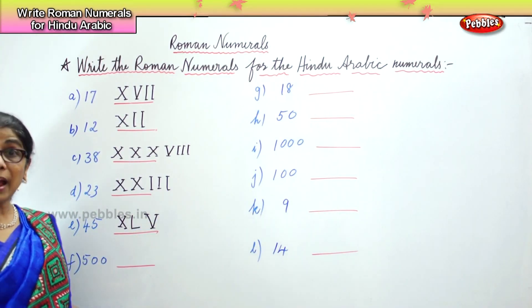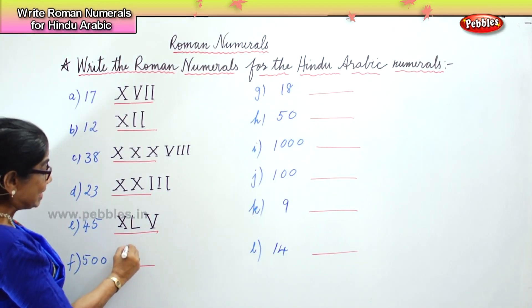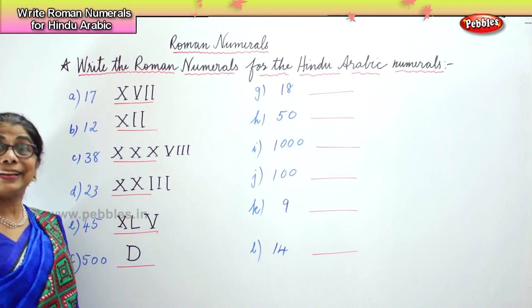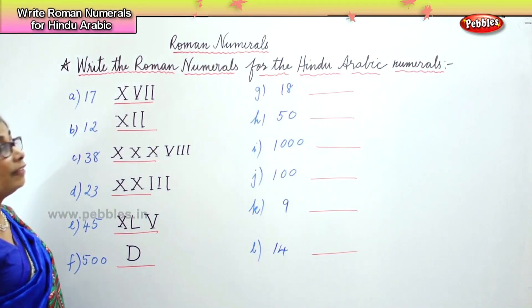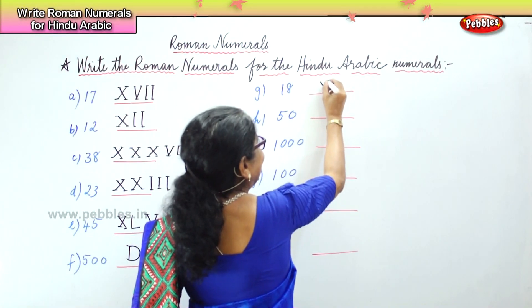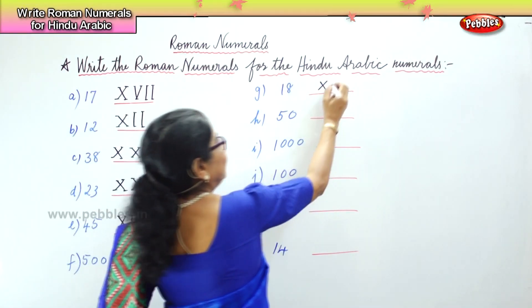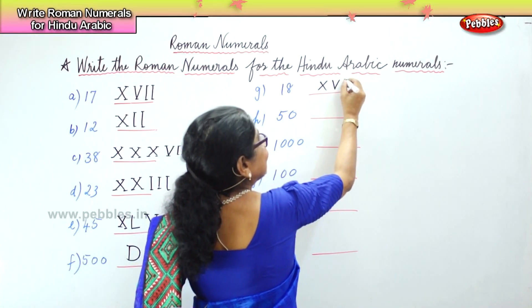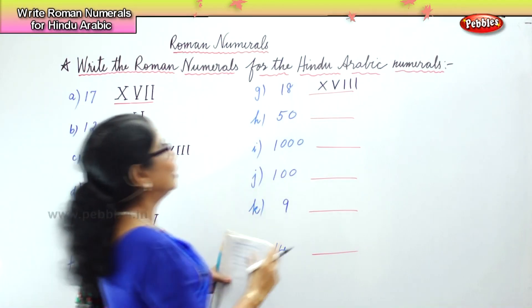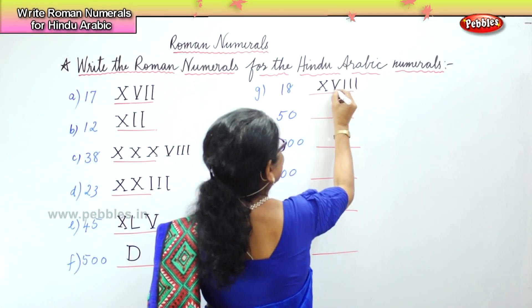Next you have 500. How do we write 500? The character is D. Next you have 18 — that's very easy: 10, 5, 15, 16, 17 and 18. Good, so 18 is easy.